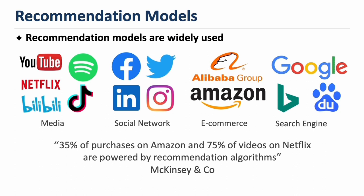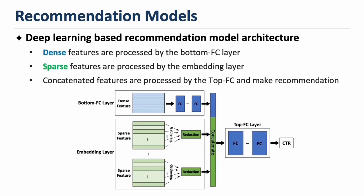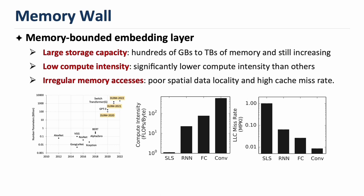As we know, recommendation models have become a fundamental building block of the internet industry and are widely used in a range of applications. This figure shows a deep learning-based recommendation model architecture which consists of two fully connected layers and an embedding layer. As the compute-intensive fully connected layers are well studied, we focus on the memory-bounded embedding layer in this work.